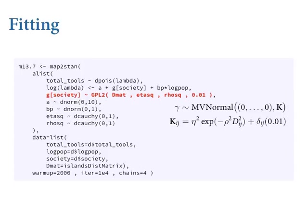Hawaii is even more distant from the other societies than the great-circle distance indicates, because none of the trade winds or currents will get you there from the rest of Polynesia. Hawaii is just out in nowhere, and there's nothing else in the area. It took forever to discover it — people got to Hawaii really late compared to the rest of Polynesia.